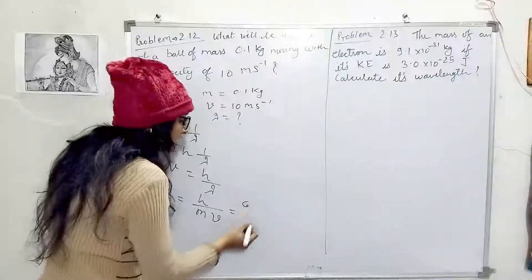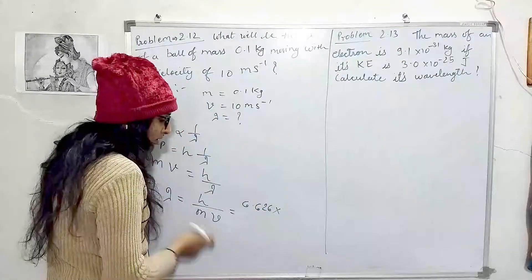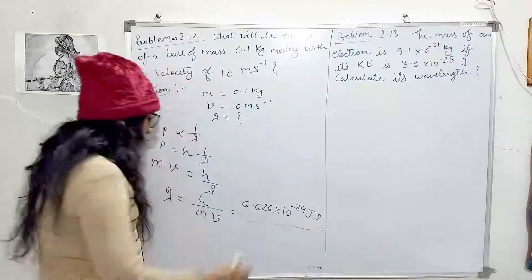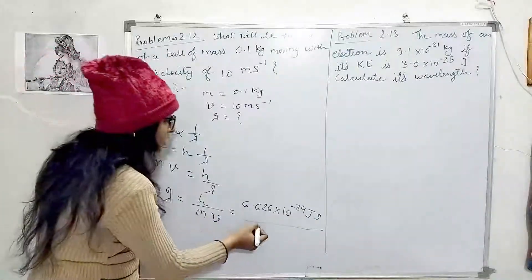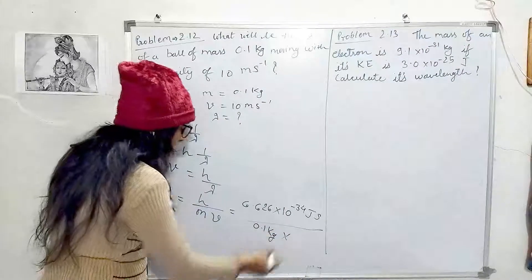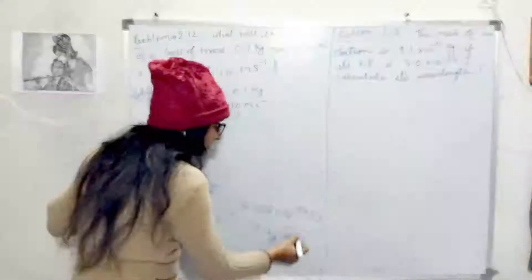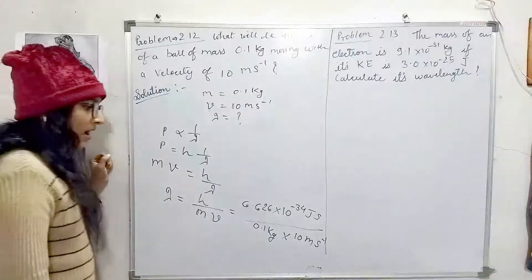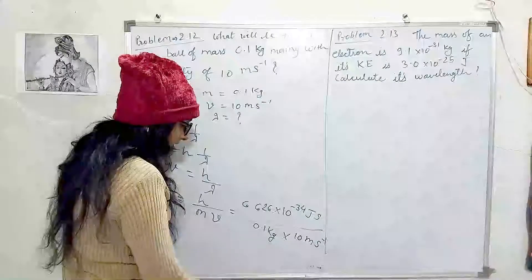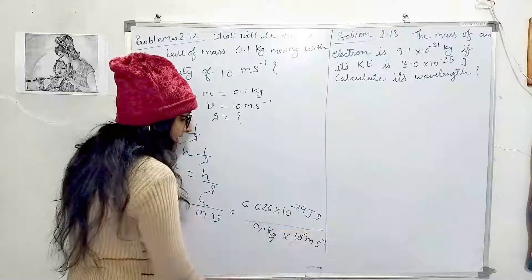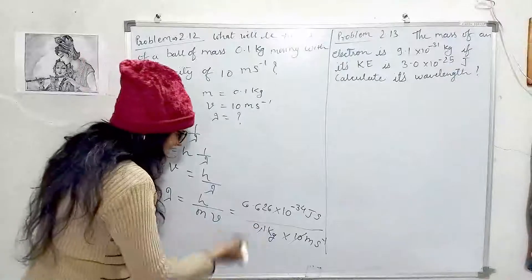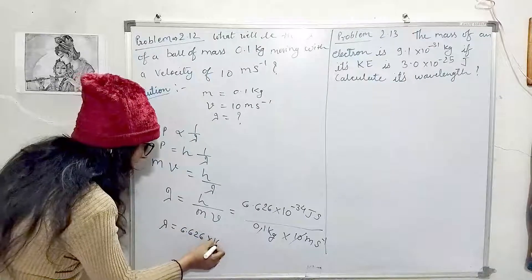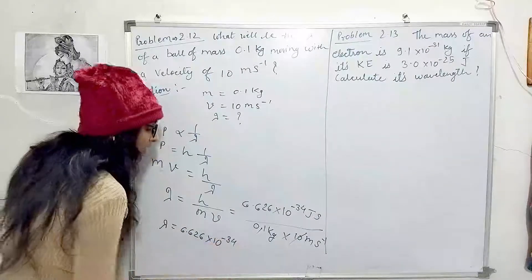Substituting values: h = 6.626 × 10⁻³⁴ joule·second, mass = 0.1 kg, velocity = 10 m/s. After cancellation, the wavelength comes out to be 6.626 × 10⁻³⁴ meters.